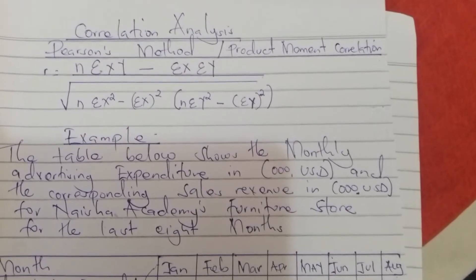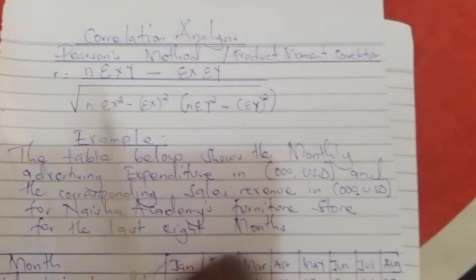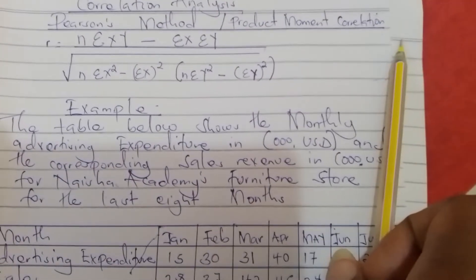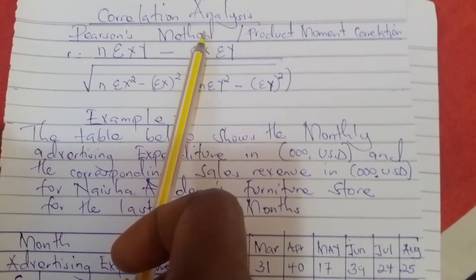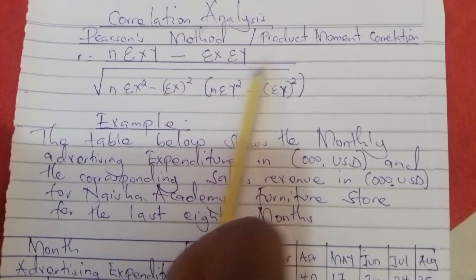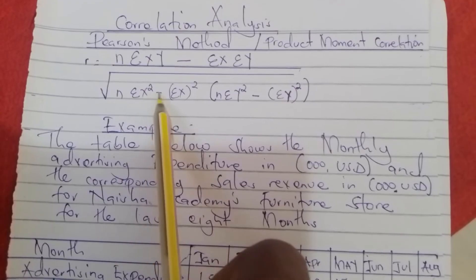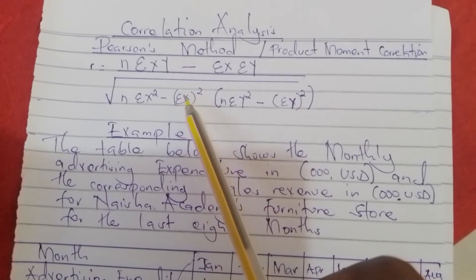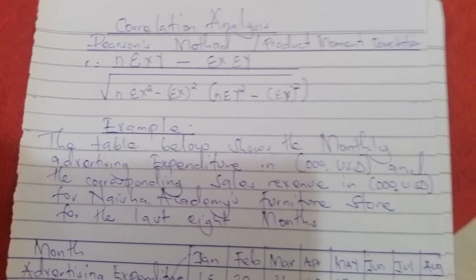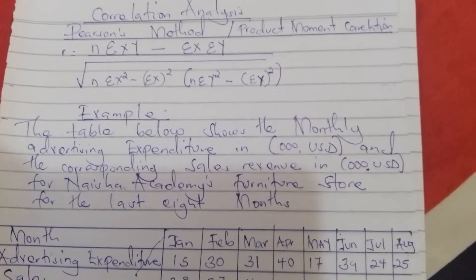We are going to look at correlation analysis and there are two methods we will use, but we are first looking at Pearson's method, or the product moment correlation. The formula for calculating the relationship between the variables using Pearson's method is: R equals n summation xy minus summation x summation y, divided by the square root of n summation x squared minus summation x bracket squared, then n summation y squared minus summation y bracket squared.